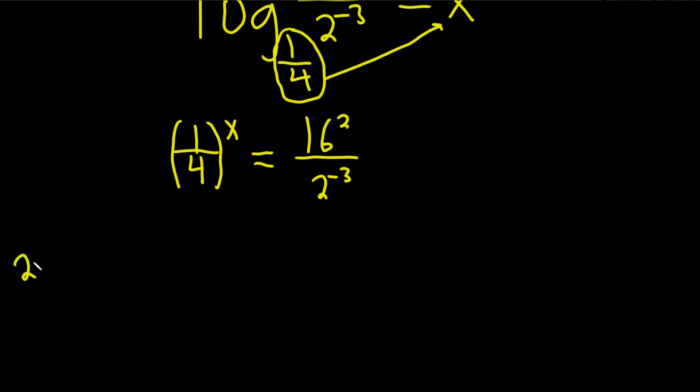if we have like 2 to the x equals 2 to the y, then we get x equals y. So if we have a base of 2 on both sides, we can get rid of the exponent, and the x here is in the exponent.